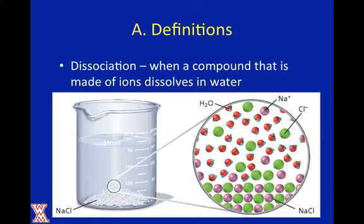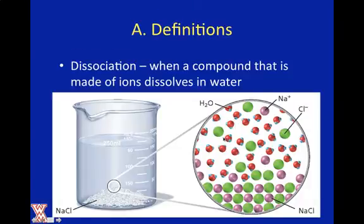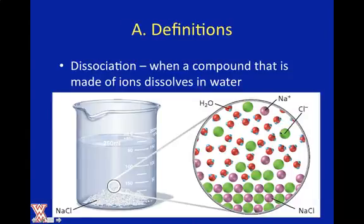We talked a little bit about dissociation in one of our previous discussions. Dissociation is when a compound that is made of ions dissolves in water. What happens is the negatively charged ends of the oxygen come into contact with the positive sodium, and the partial positive charge on the hydrogens comes into contact with the chlorine. These water molecules surround the ions and break it apart — that's the process of dissociation.